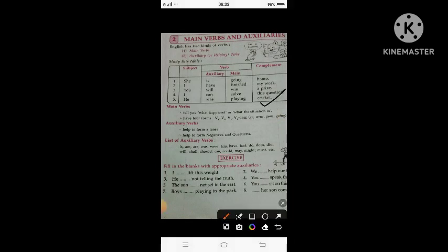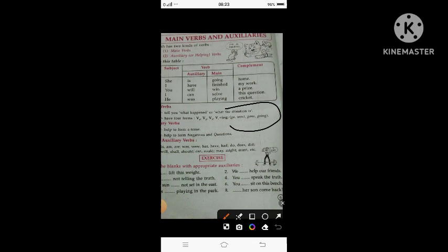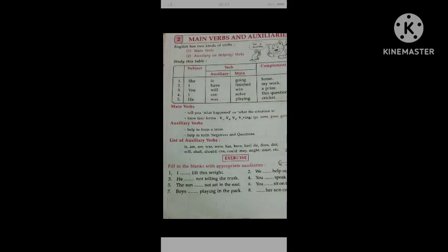Verbs have four forms: form one is the base form, form two is past tense, form three is past participle, and form four adds -ing. For example: go, went, gone, going. Main verbs can use these forms, while auxiliary verbs help with tenses.